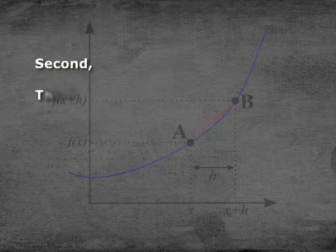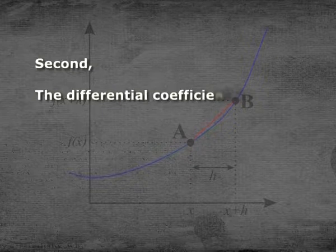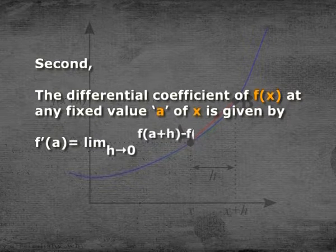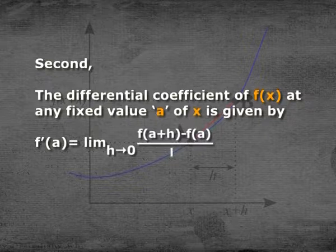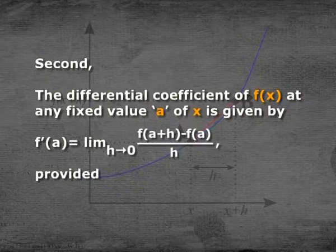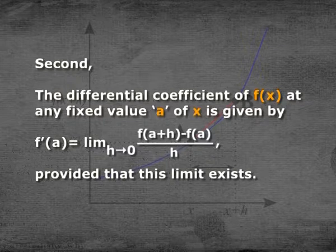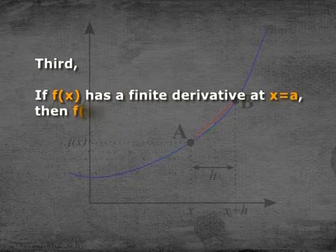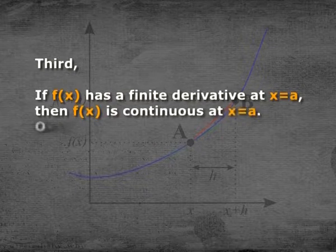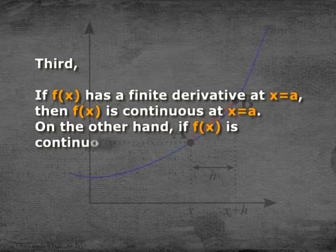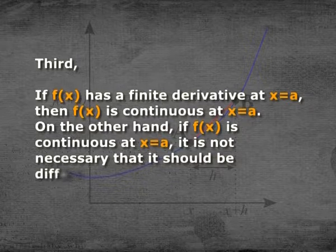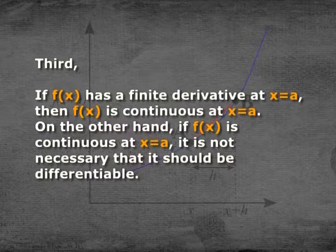The differential coefficient of f(x) at any fixed value a of x is given by f′(a) = limit h→0 of [f(a + h) − f(a)] / h, provided this limit exists. Also, if f(x) has a finite derivative at x = a, then f(x) is continuous at x = a. However, if f(x) is continuous at x = a, it is not necessary that it should be differentiable.